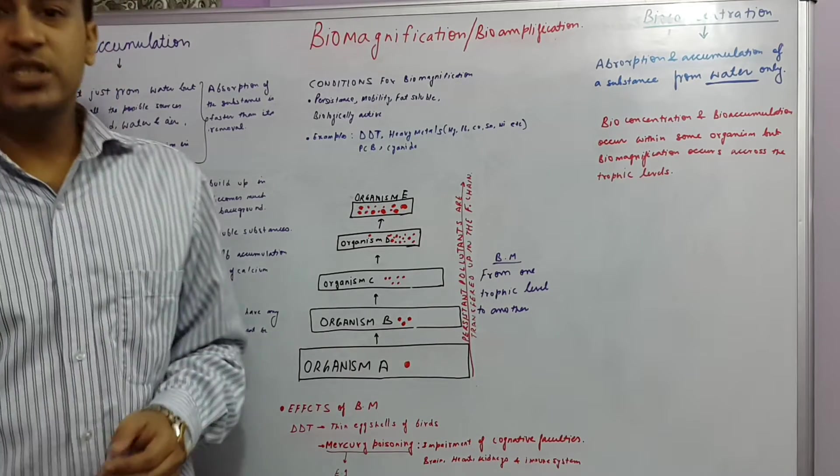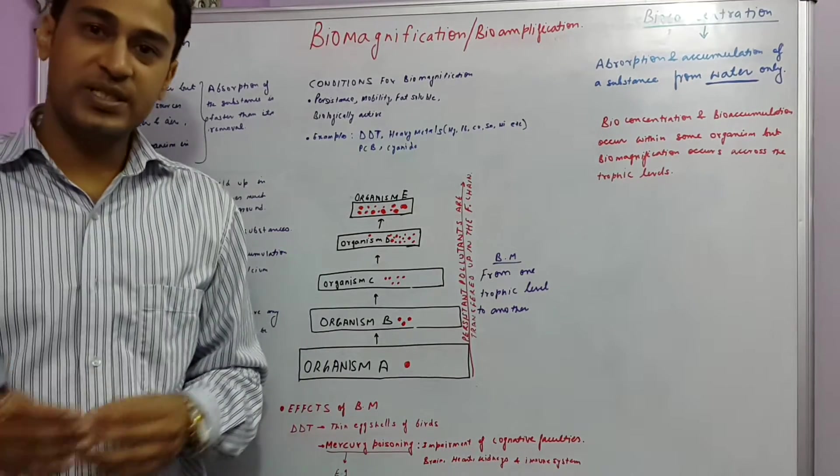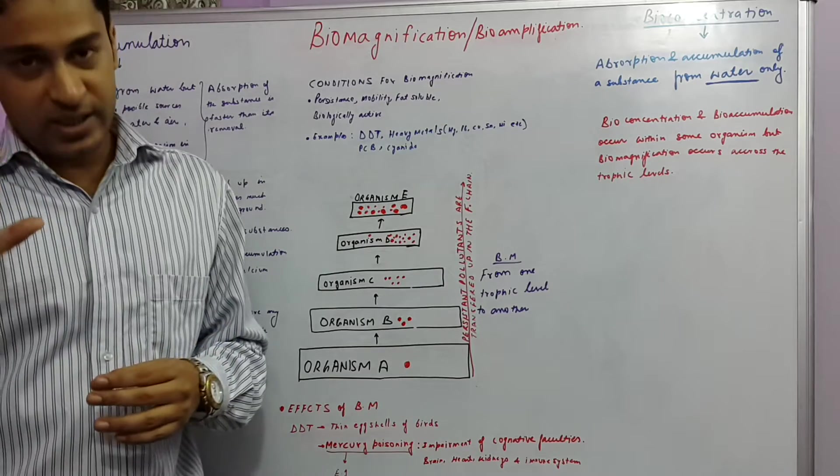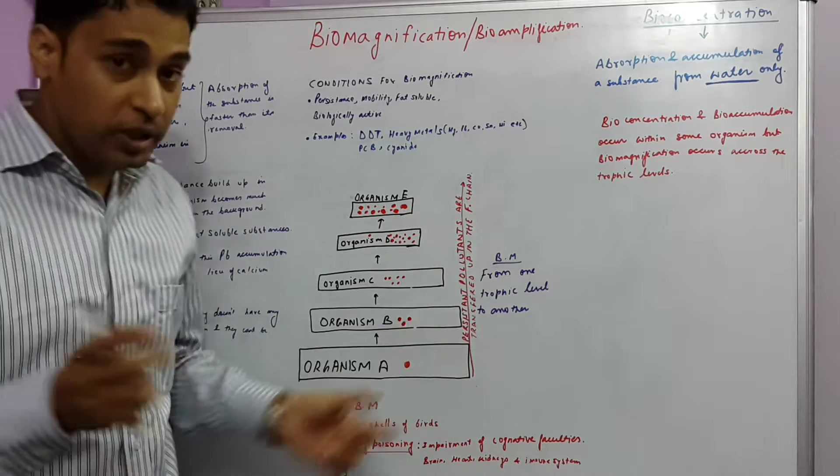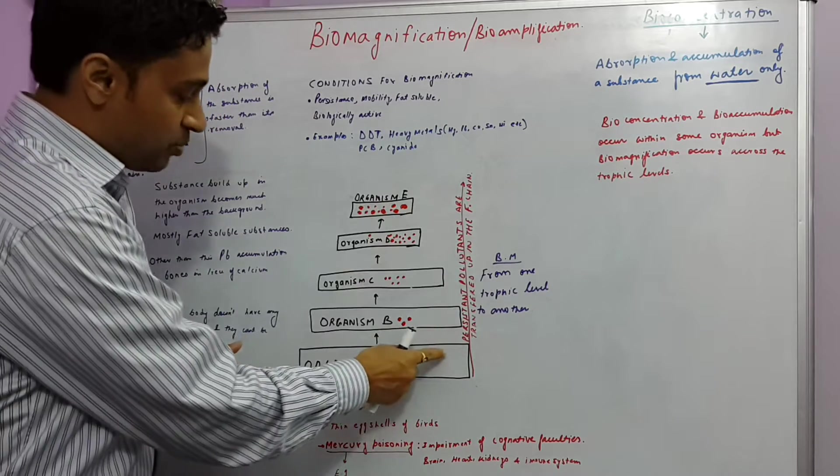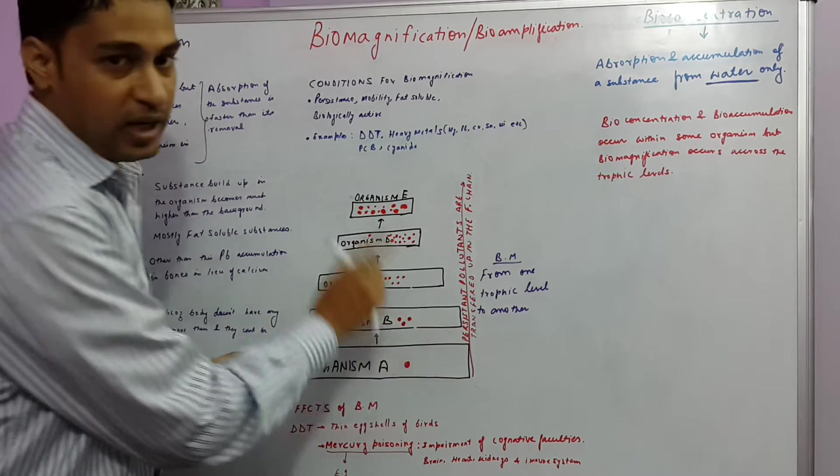Now what happens here is that the concentration of a substance keeps increasing in the same organism, not across the trophic levels but within some same trophic level.